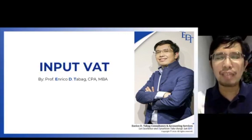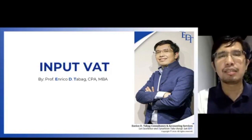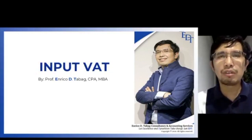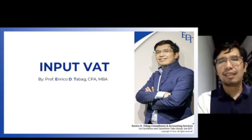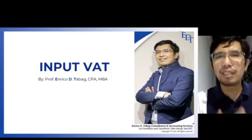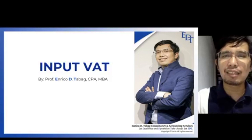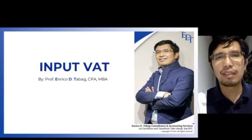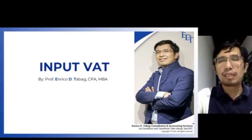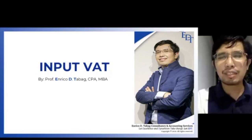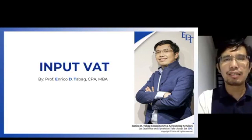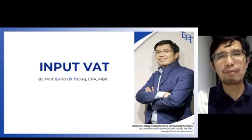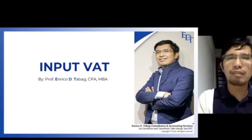The other type of VAT, which we also discussed in previous videos, is the input VAT — also known as the VAT on your purchases. As discussed in our introduction to value added tax, one of the characteristics of VAT is that it is a credit invoice method. What we remit to the BIR is actually the excess of output VAT over input VAT — the excess of VAT on sales over VAT on purchases.